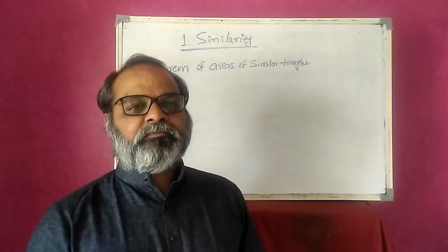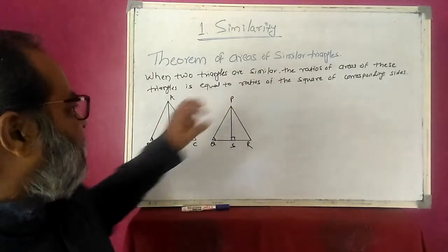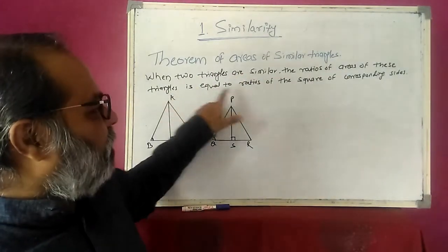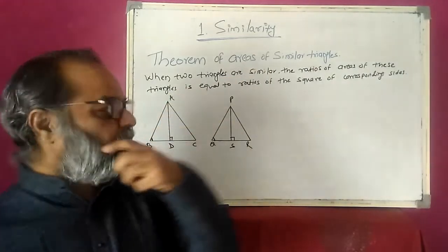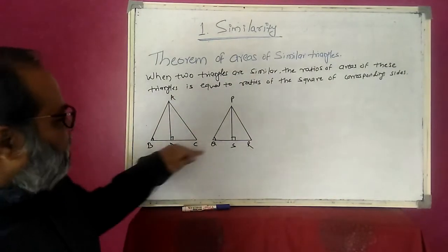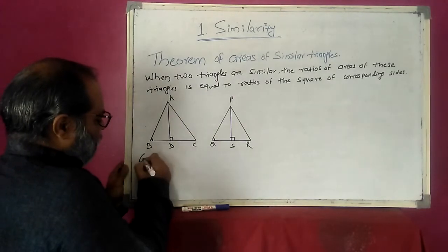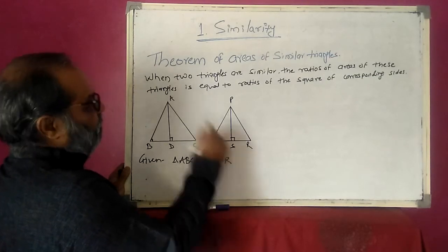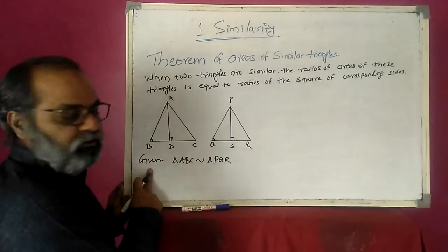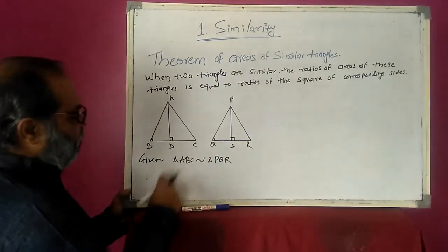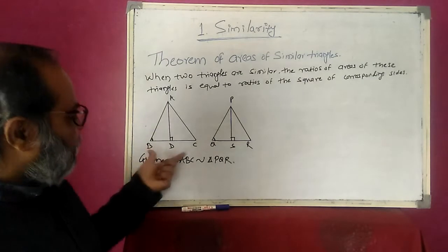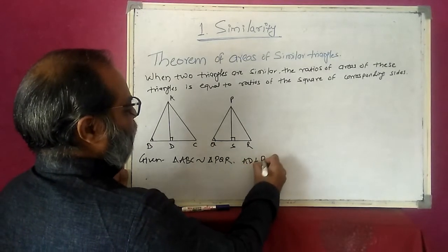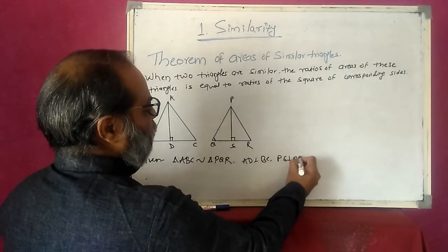The theorem says that when two triangles are similar, the ratio of area of these triangles is equal to the ratio of the square of corresponding sides. In this figure, triangle ABC and triangle PQR are given. Triangle ABC is similar to triangle PQR. AD is perpendicular to BC and PS is perpendicular to QR.